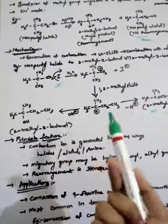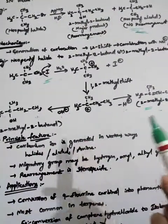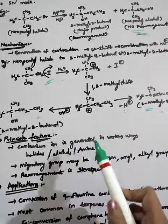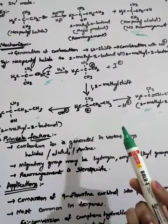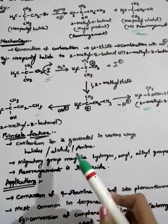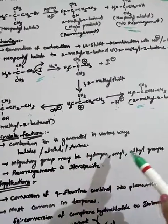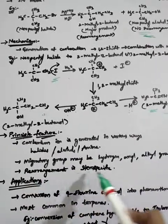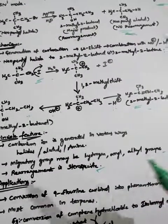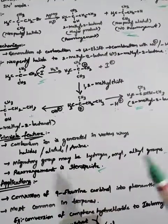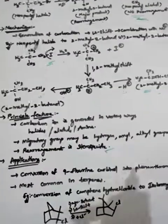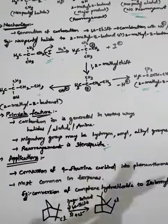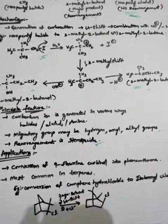The principal features are: the carbonium ion is generated in various ways — from halides, alcohols, or amines. The migratory group may be hydrogen, aryl, or alkyl groups. The rearrangement is stereospecific — stereospecific aspects will be explained in detail in future stereochemistry videos.